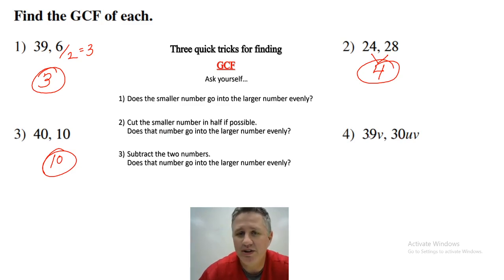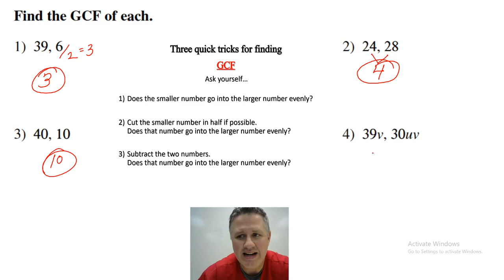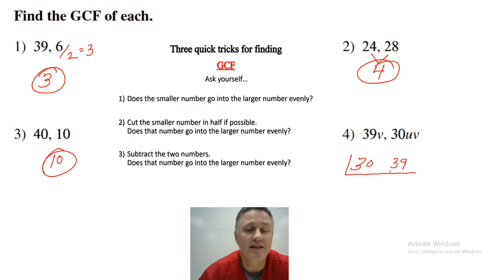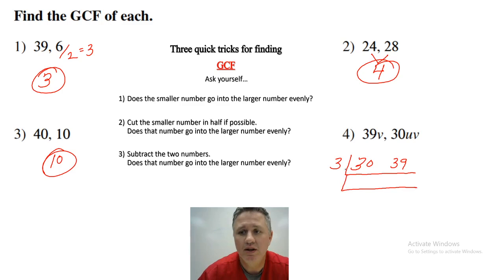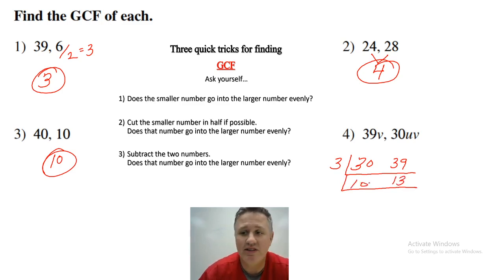30 and 39. Does 30 go into 39? No. Cut it in half — 15. Does 15 go into 39? No. And if I subtract the two, I get 9, so that doesn't work either. Rather than list all the factors out, I'm going to use the slide method. Give me one number that goes into both 30 and 39 — that would be 3. Three goes into 30 ten times and into 39 thirteen times. No other number besides 1 goes into 10 and 13, so the GCF is 3.